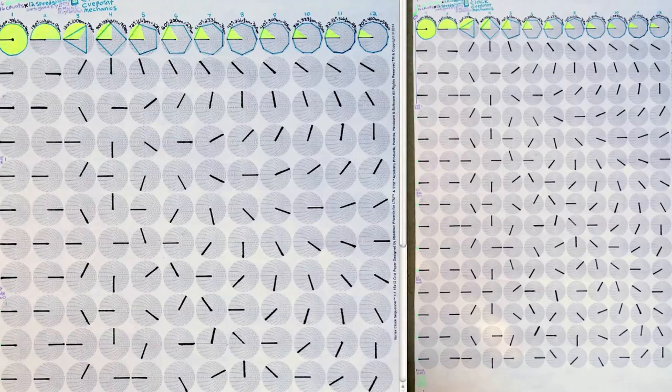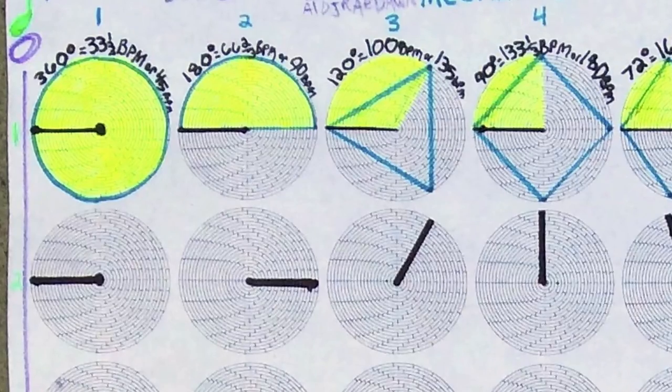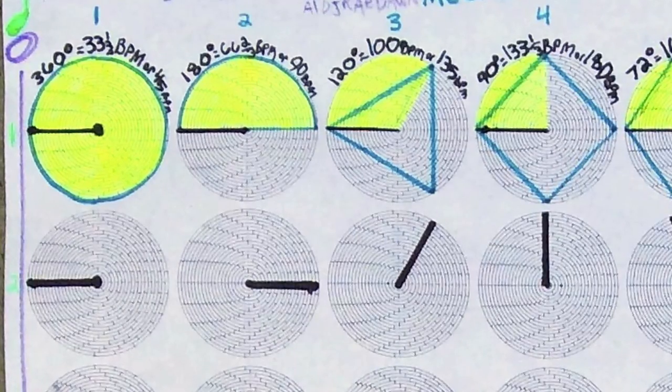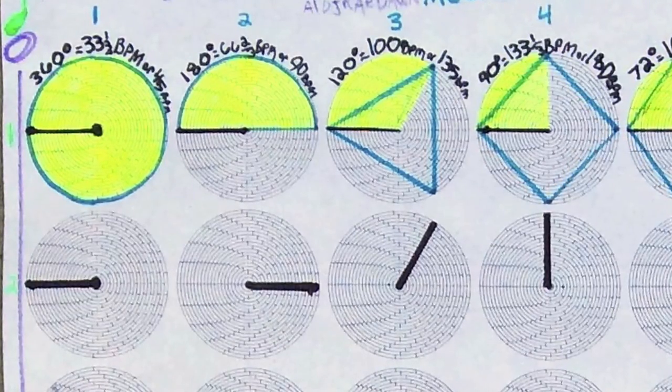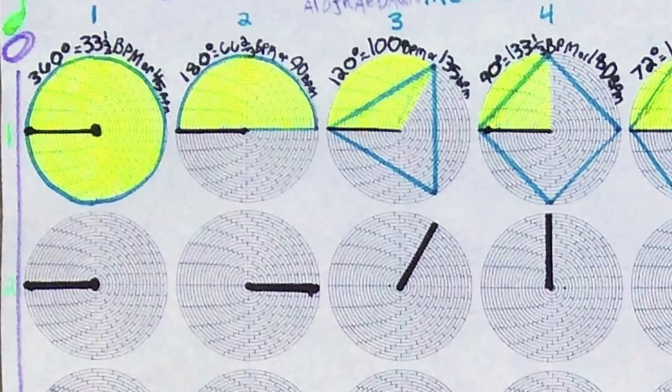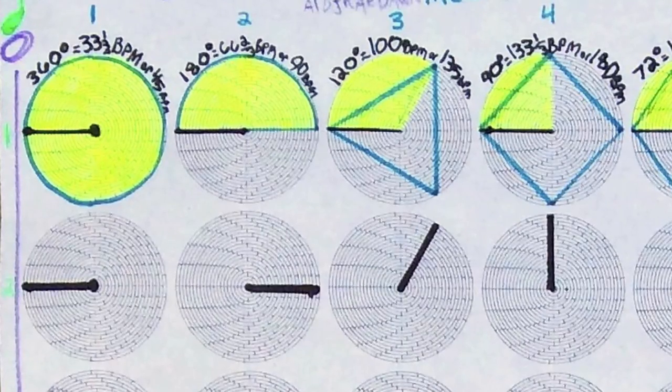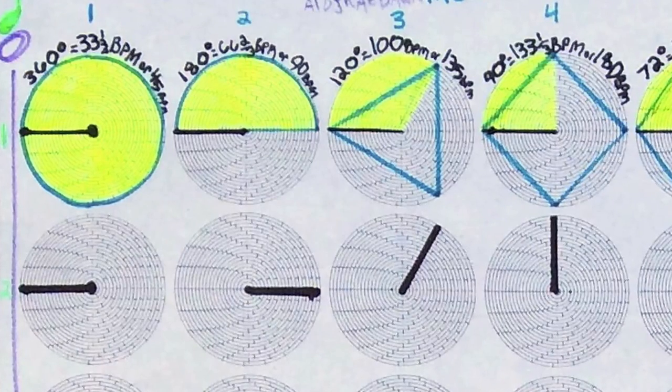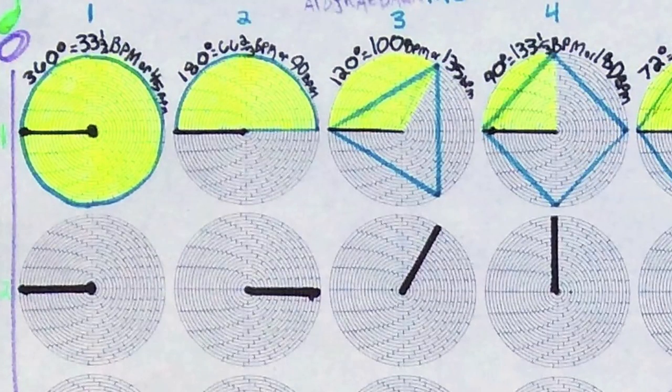What's also interesting is that only the first four speeds complete a full cue point rotation within one bar: 33 and one third BPM, 66 and two thirds BPM, 100 BPM and 133 and one third BPM. So far, most skip proof battle records have only used these first four skip proof speeds historically. It's for this reason that this lecture and work is also a preparatory study for the TTM 21 speed skipless battle record that is coming soon.